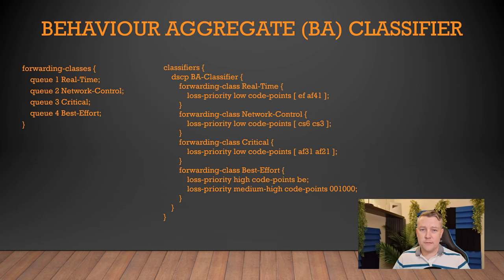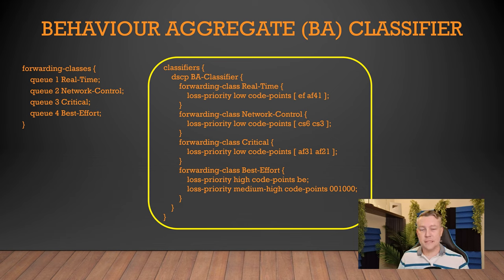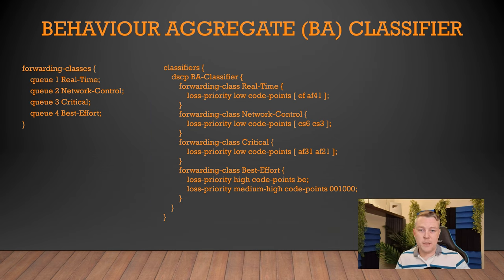Traffic then needs to be classified if we are to take an action on it. When we classify traffic we're assigning it, based on some criteria, to a forwarding class. These are configured under the class of service classifiers hierarchy. A simple way to do this is with a BA classifier, which looks at markings such as DSCP markings within the packet — and we are indeed going to use DSCP markings here, though there are other kinds you can use.